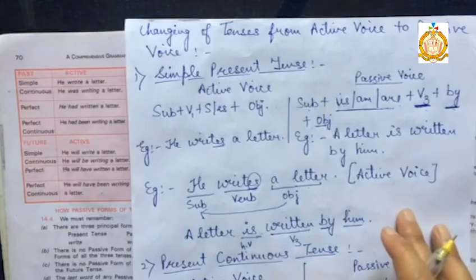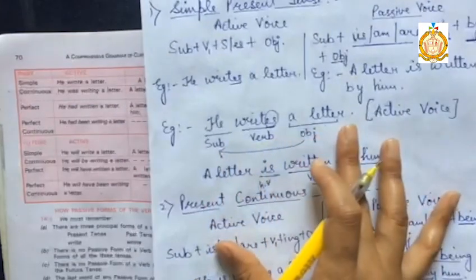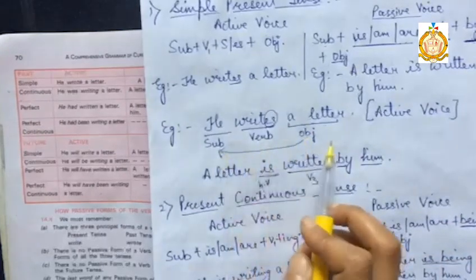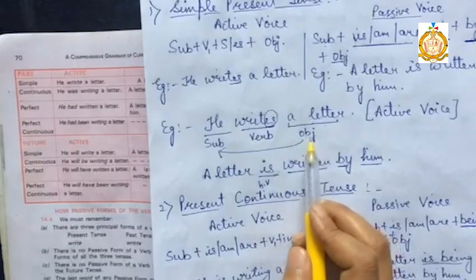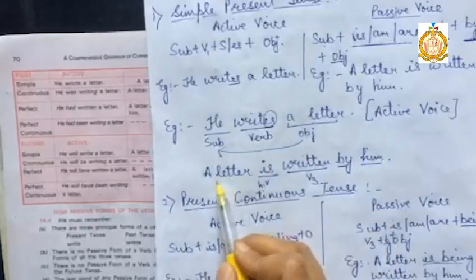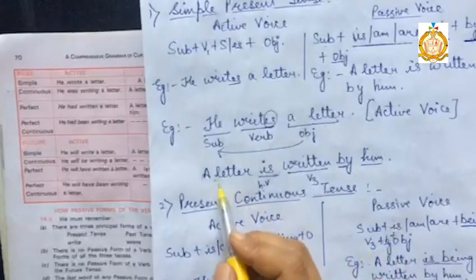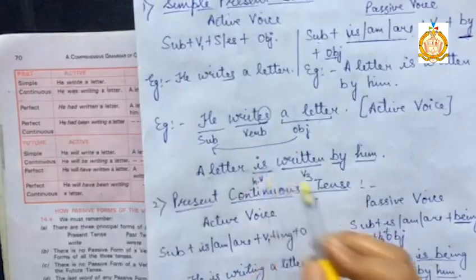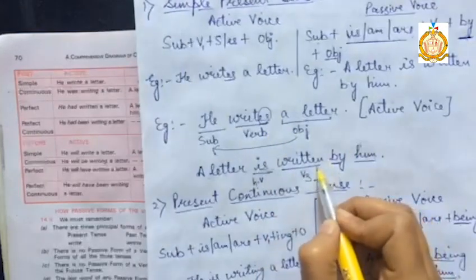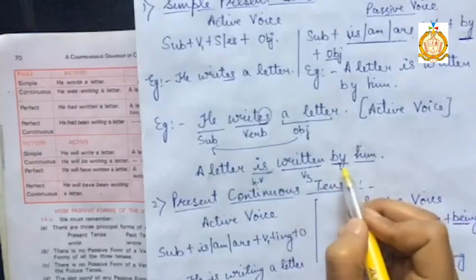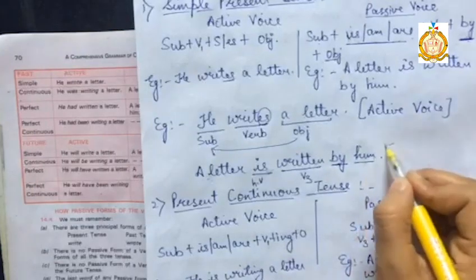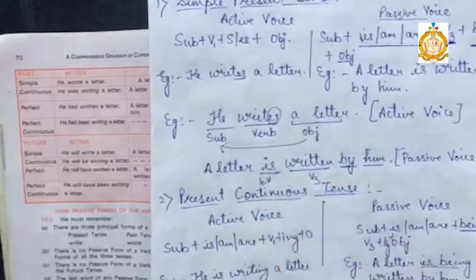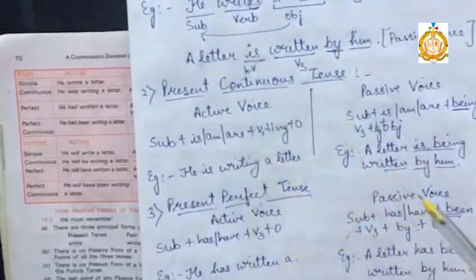The helping verbs used depend on the tense of the sentence. If your sentence is in present tense, only helping verbs used in present tense will be applied. See the sentence: 'He writes a letter.' The first step is to find the subject, verb, and object. Next, we interchange the object with the subject, so our new sentence begins with 'a letter.' Since 'a letter' is singular, we apply 'is,' and the third form of 'write' is 'written,' followed by 'by him.' So the passive voice is: 'A letter is written by him.'